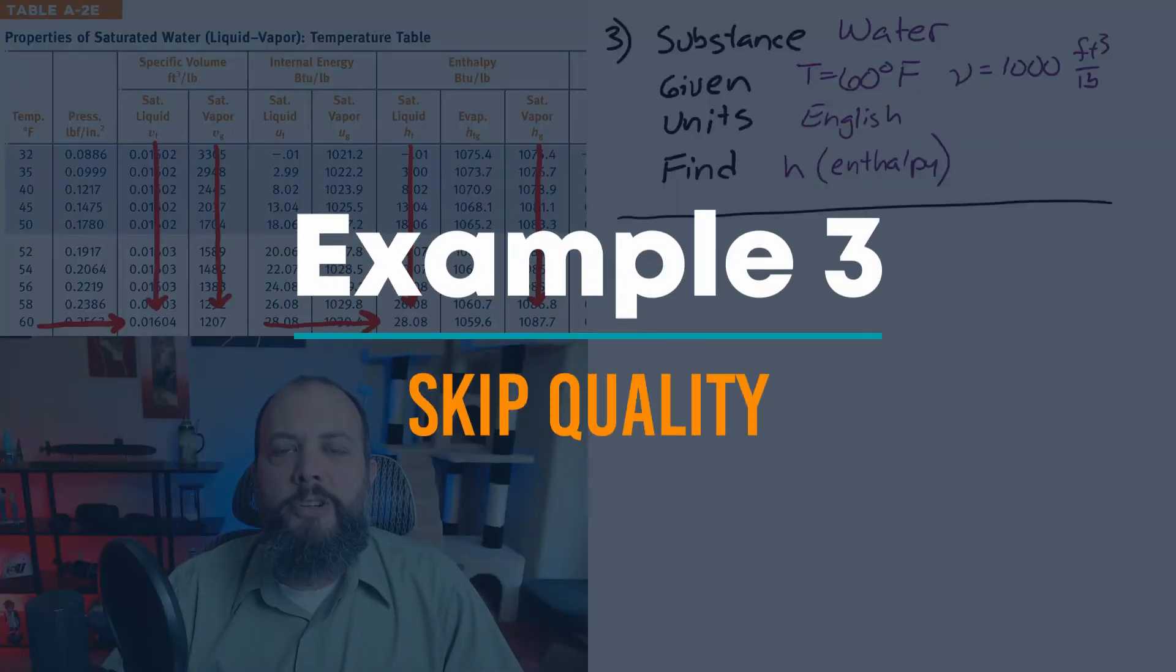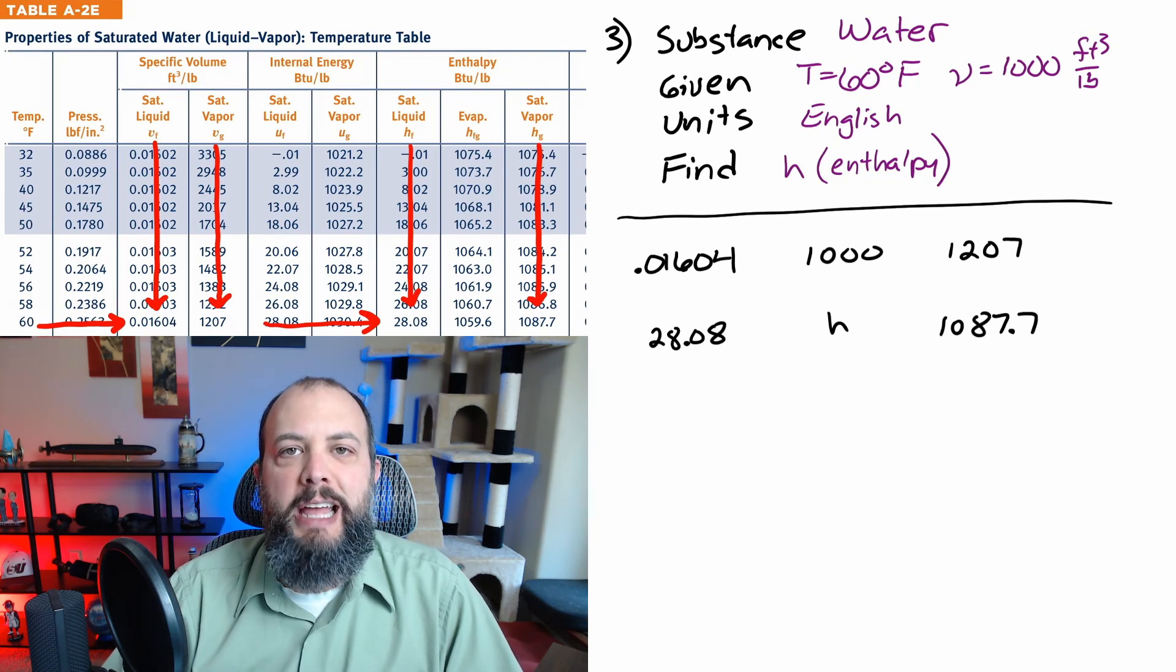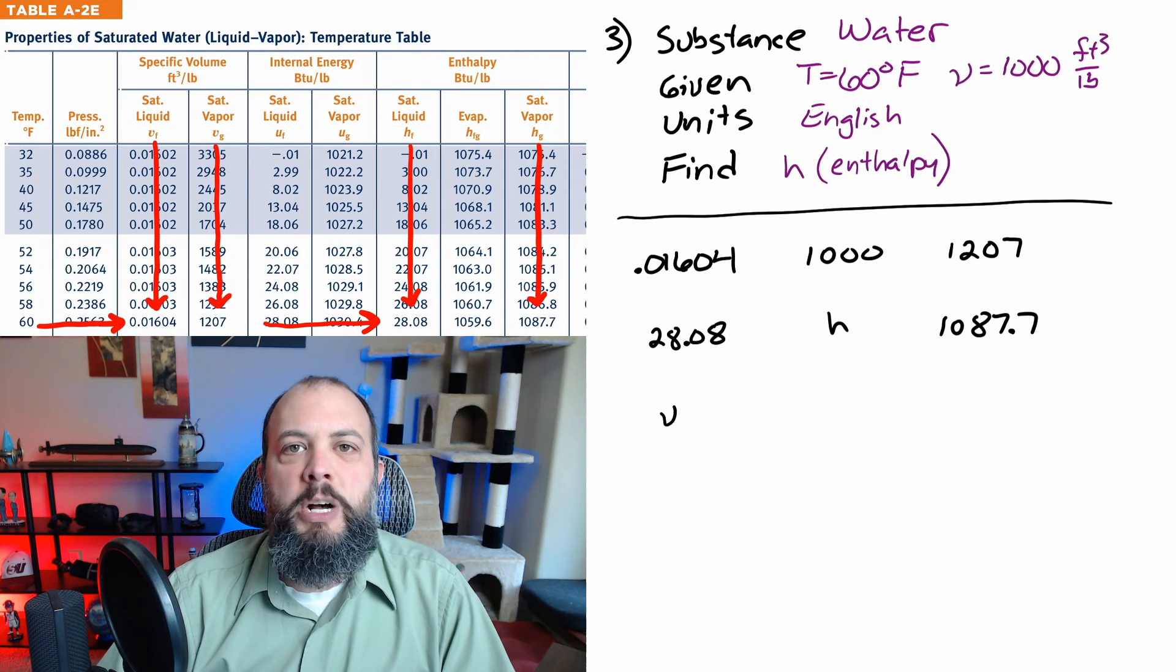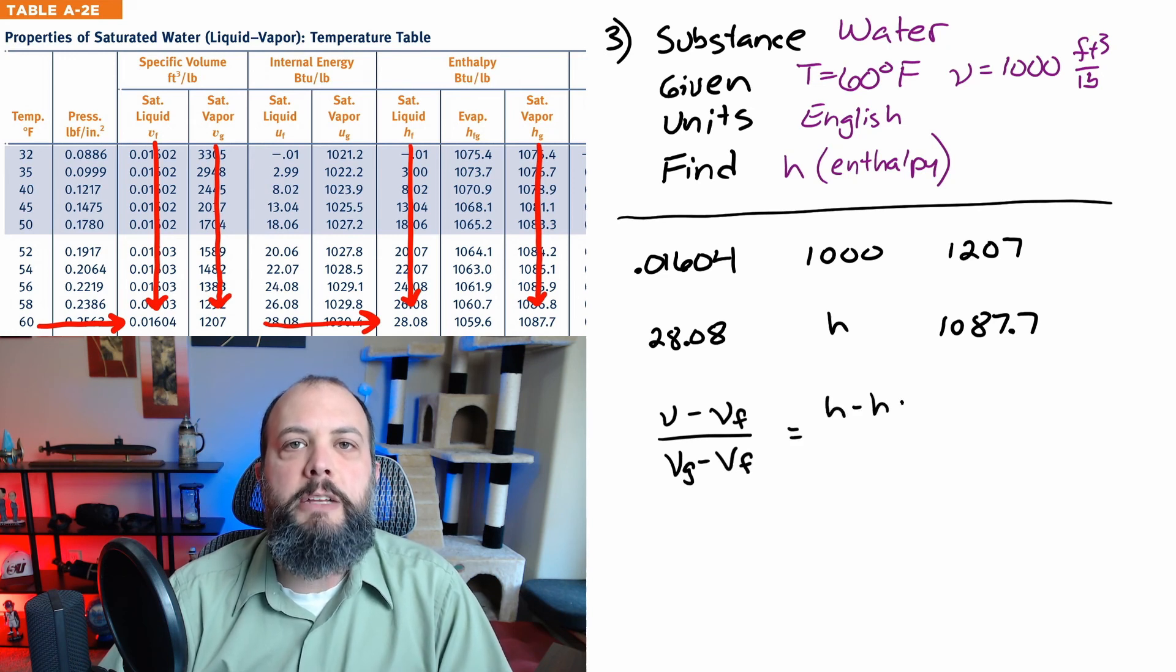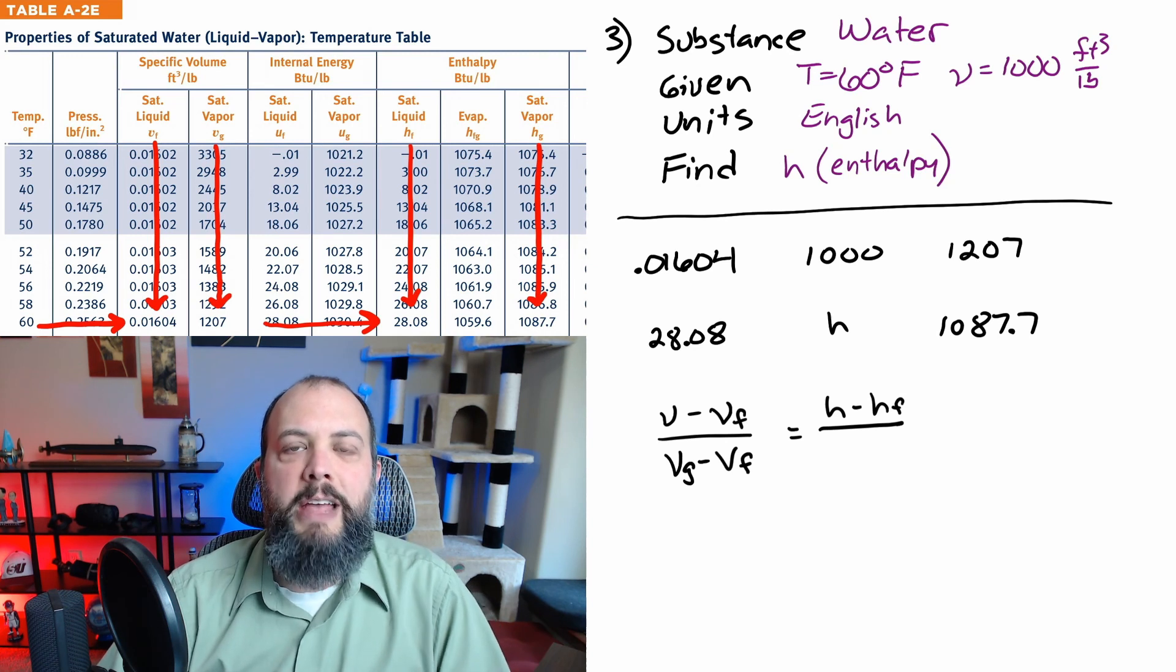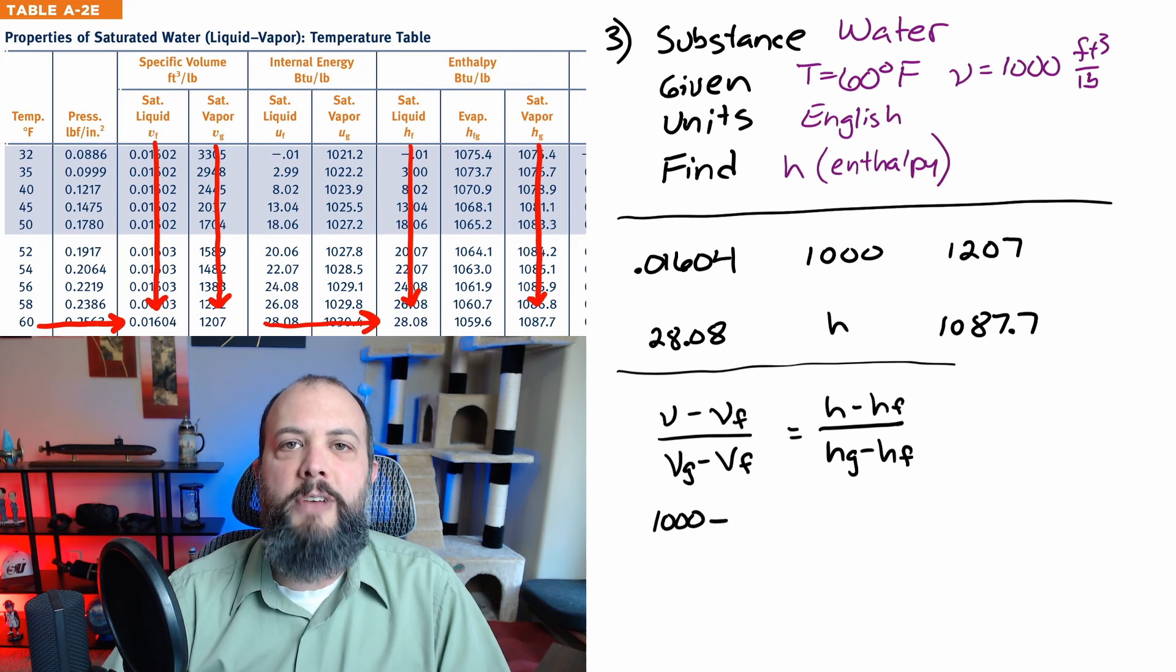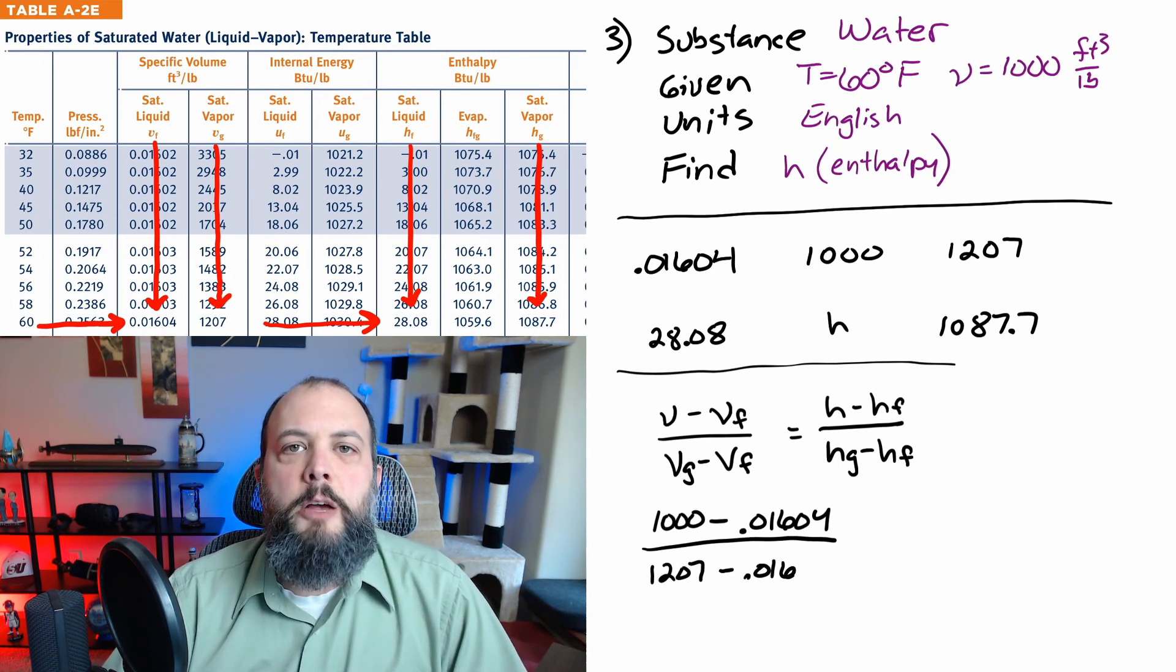We're back to using water as our substance but now we have English units provided. We can find these values in the saturated water table A-2E. Since we're given a specific volume that falls in between the saturated fluid and saturated gas, it is possible to skip the step of finding the exact numerical value for quality by setting up a ratio that compares specific volume to enthalpy directly. Essentially we're looking for the value of H that is the same percentage distance between the saturated fluid and saturated vapor value as the 1000 is for specific volume.